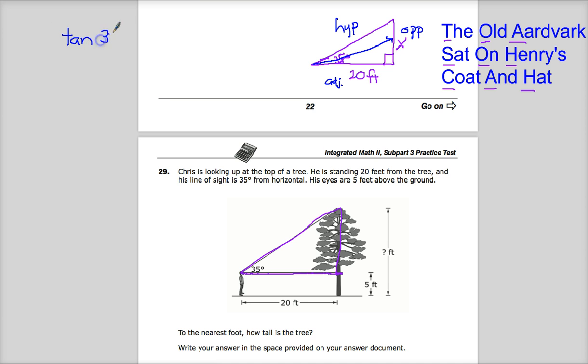Tangent of 35 degrees is equal to opposite over adjacent. So now I can substitute in my values.